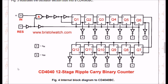Here is the internal block diagram of a CD4040. It's just a string of flip-flops connected in series. Each flip-flop will divide by two. I labeled the flip-flops a little differently — flip-flop Q1 is on pin 9, which would be the Q1 output. I labeled the flip-flops based on the Q output on the 16-pin DIP.